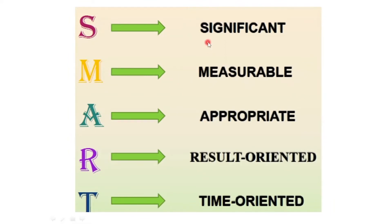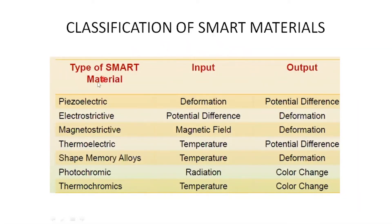The word SMART stands for: S — Significant and Measurable, meaning changes can be quantified; A — Appropriate; R — Result-oriented, meaning the material changes properties based on your requirement; and T — Time-oriented, because time is also very important when considering smart materials.